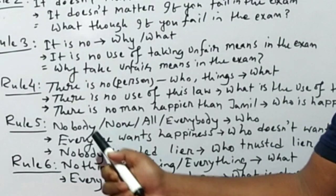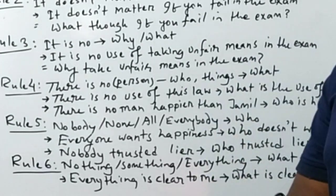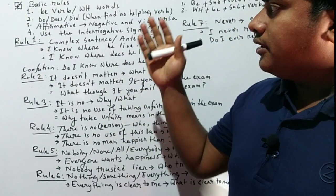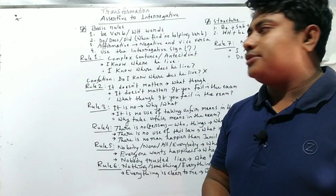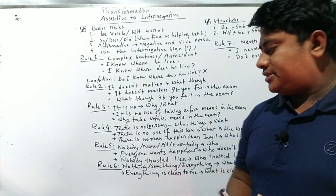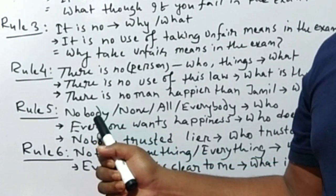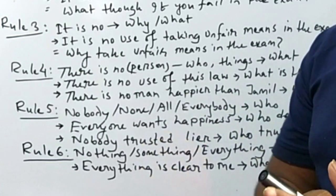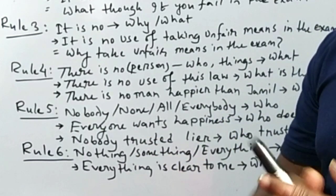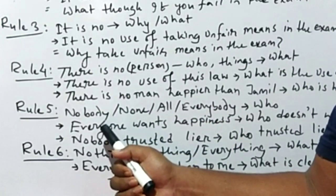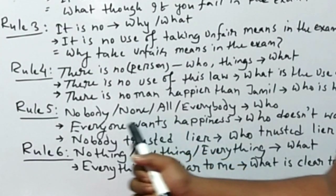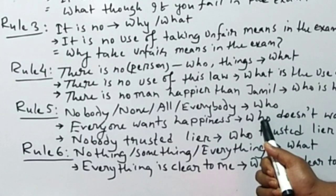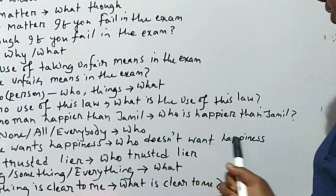Rule five: the words nobody, none, all, and everybody are replaced by 'who' in interrogative sentences. Remember: affirmative sentences will become negative. When we use 'nobody' we just use 'who.' When we use 'everybody,' we use 'who' alongside 'do not,' 'does not,' or 'did not' — a negative must be included. Example: 'Everyone wants happiness' becomes 'Who doesn't want happiness?'